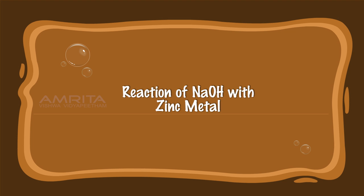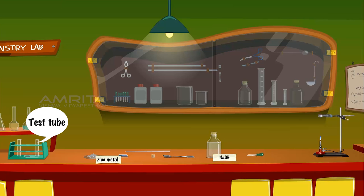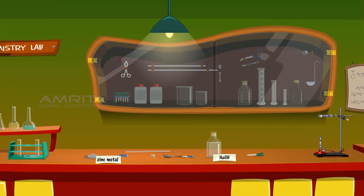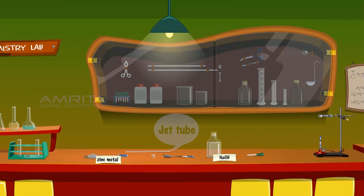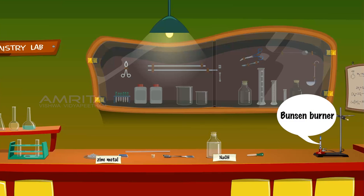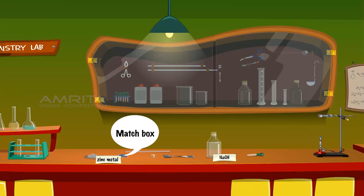Reaction of NaOH with Zinc Metal. We require a test tube, some zinc metal in a dish, a spatula, NaOH solution, a dropper, a stand with a clamp, a single board cork, a jet tube, Bunsen burner, and a matchbox.